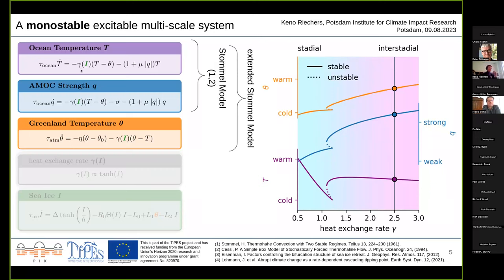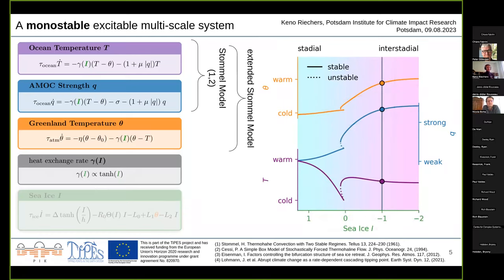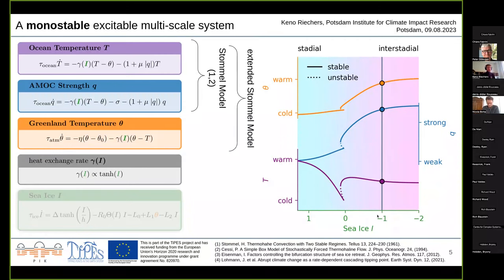We model the heat exchange rate gamma as a function of sea ice I, using a hyperbolic tangent. This is a non-linear transformation of the x-axis of the bifurcation diagram — qualitatively nothing much changes, but now sea ice I is the control parameter instead of gamma directly.